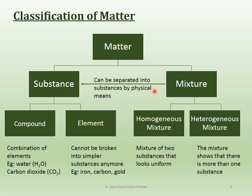Matter can be classified further into substances and mixtures. A substance is either a compound or an element. An element cannot be broken down into simpler substances — for example, iron as a metal cannot be broken down further. If you break apart the iron atom it will no longer be iron. An element is the most fundamental, purest substance possible.